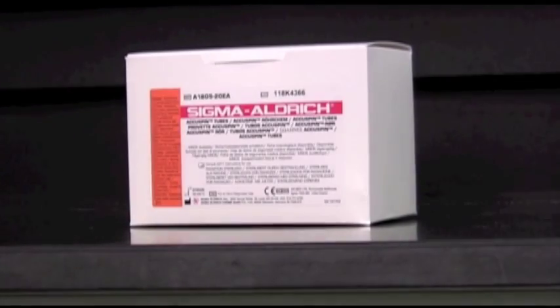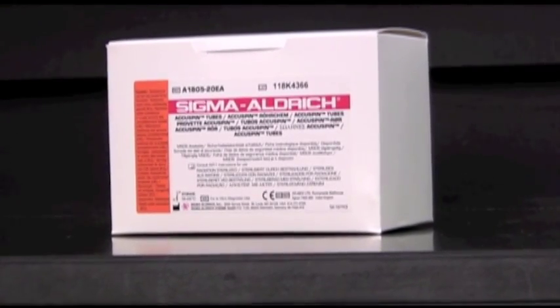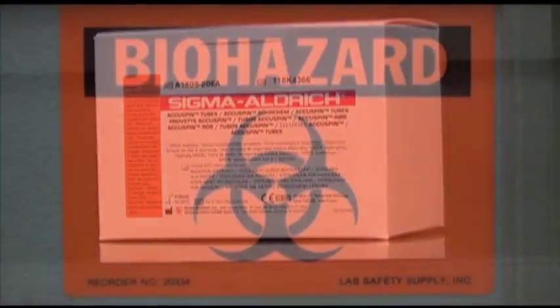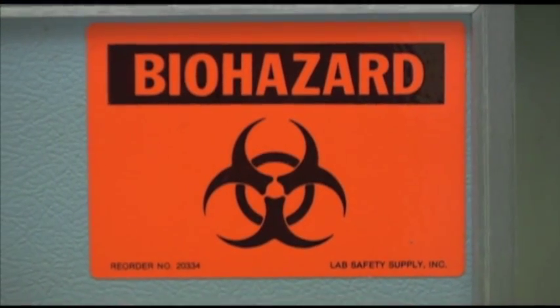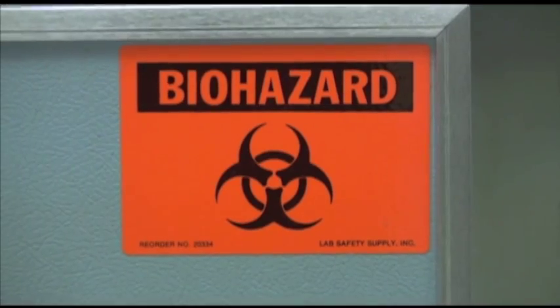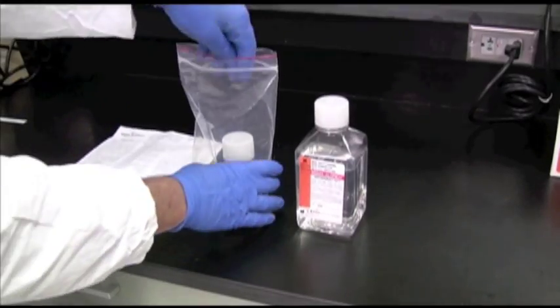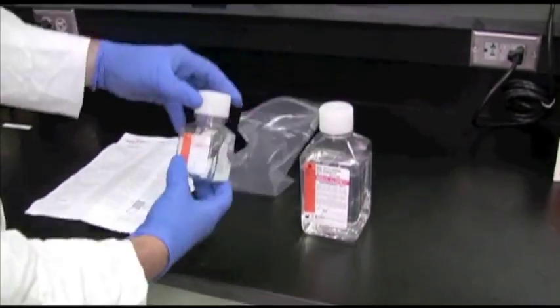Product number A1805 will be used to demonstrate the separation of whole blood using the AccuSpin system. It's important to remember that when working with human source substances that proper precautions be exercised. To begin, bring the Histopac 1077 to room temperature.